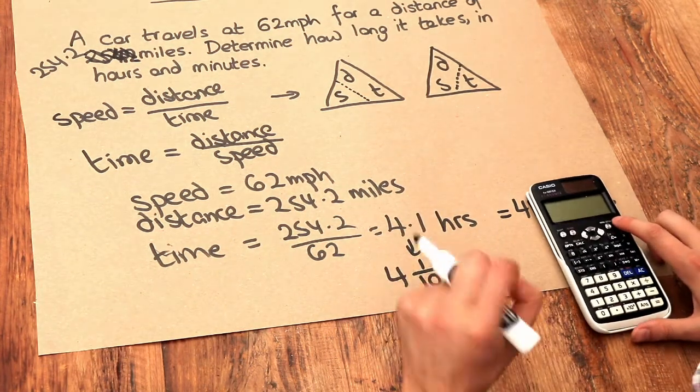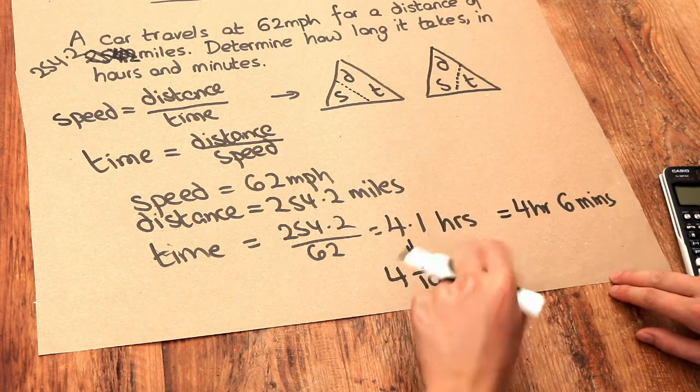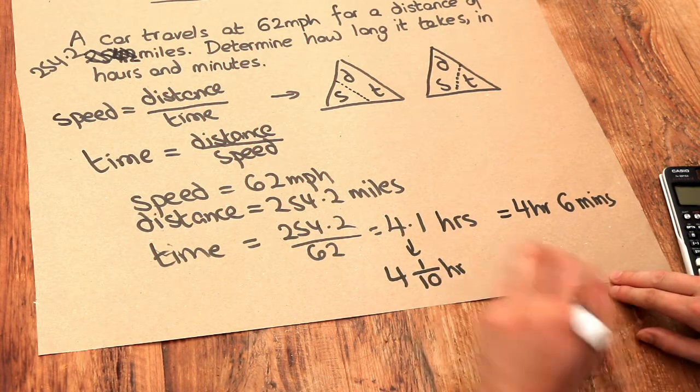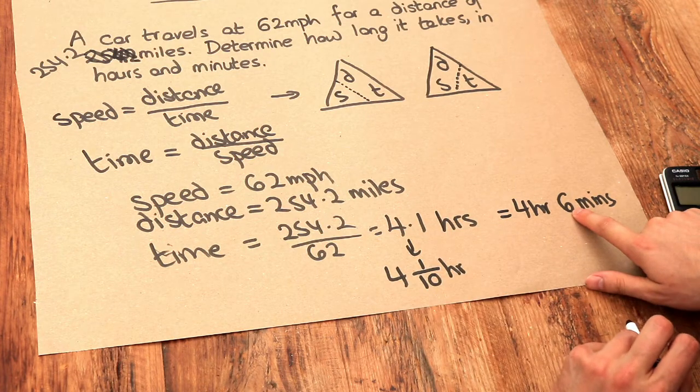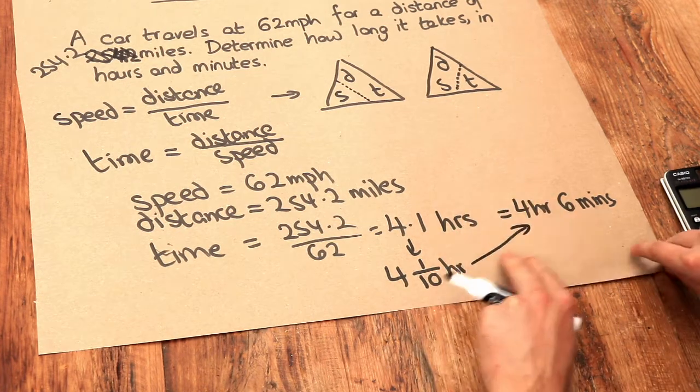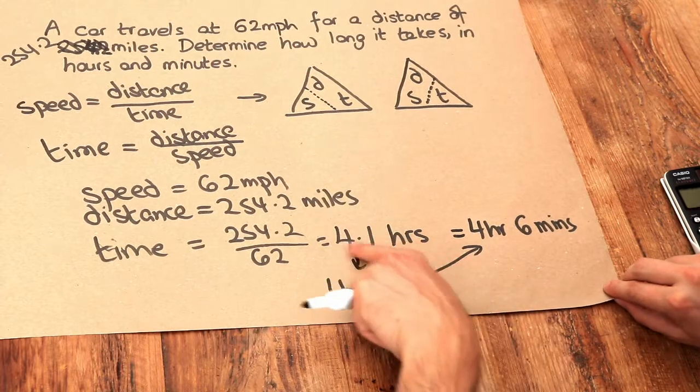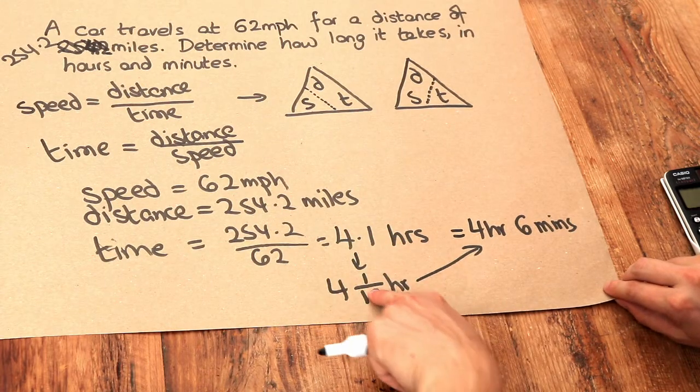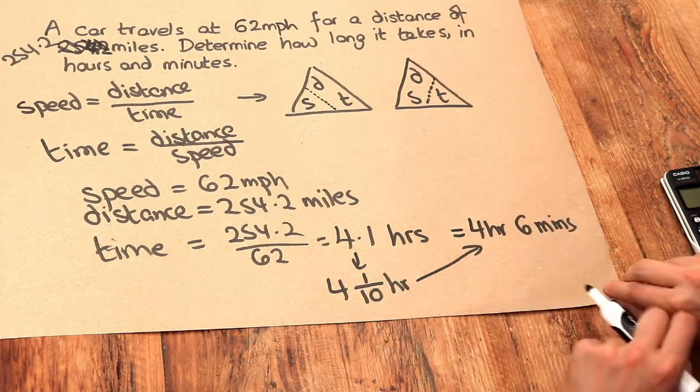What's a tenth of an hour? Well, an hour is 60 minutes. So therefore, a tenth of an hour is a tenth of 60, which is 6 minutes. So even without this key, we can convert from the decimal form to the fractional form and then get the number of hours and minutes.